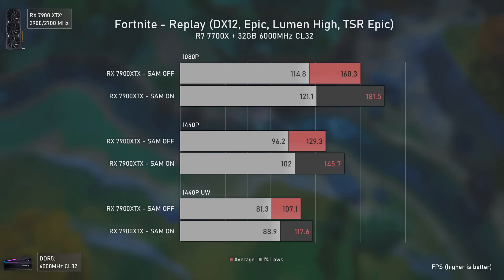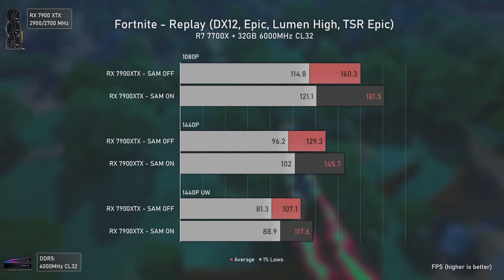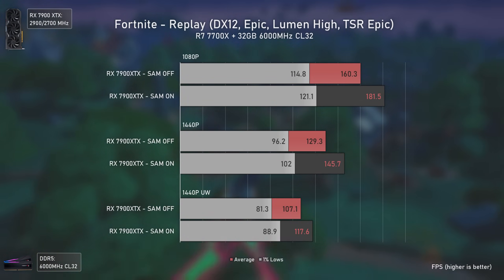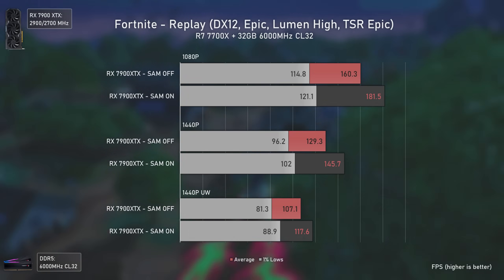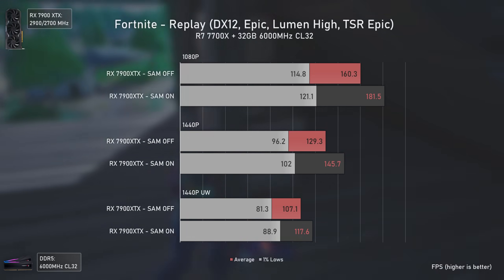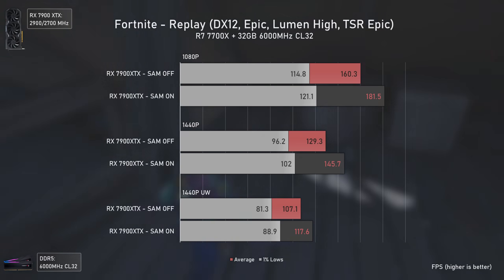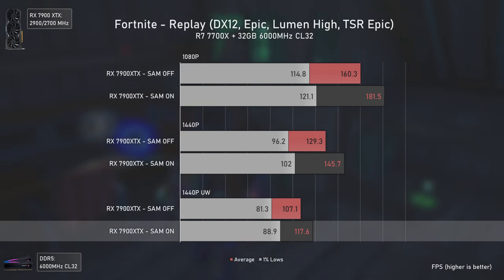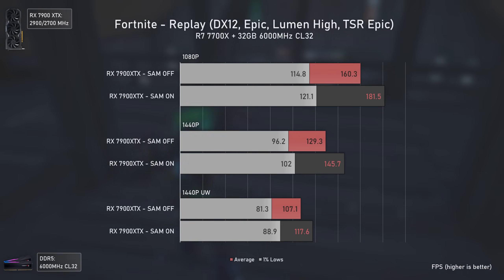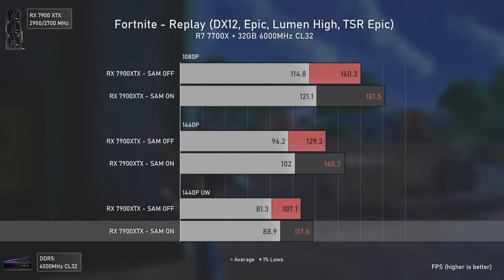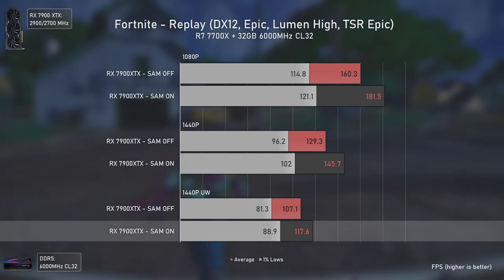Getting closer to the final results, we have Fortnite using Unreal Engine 5.1 Nanite, Epic settings, Lumen set to High, and Temporal Super Resolution at Epic settings and High Quality — which is basically equivalent to using DLSS or FSR 2.1 in Quality mode. Unlike PUBG, Fortnite does deliver better performance with Smart Access Memory — both in averages and 1% lows — with a 13% average FPS increase at 1080p, 12% at 1440p, and 10% at 1440p Ultra Wide. Fortnite may look simple but it is as heavy as it is beautiful using Unreal Engine's Nanite and Lumen, which is why even the RX 7900 XTX at 1440p Ultra Wide with Temporal Super Resolution can only achieve 117 average FPS.